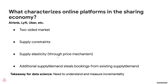A third commonality is supply elasticity — there can be an elastic response to increase demand through the price mechanism. A fourth point is that additional supply is not necessarily incremental: if you add supply to a marketplace, yes, it will bring additional bookings, but those might not be incremental — they might be stealing bookings from other supply on the platform. That's something we spend a lot of time thinking about, and the takeaway for data science is that we really need to understand and measure incrementality closely.